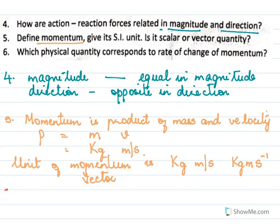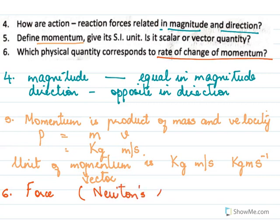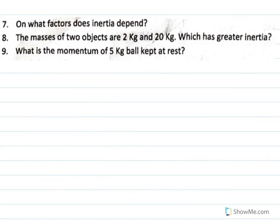Which physical quantity corresponds to rate of change of momentum? It is force. This is given by Newton's second law, which says that rate of change of momentum is directly proportional to force. So remember: rate of change of momentum is force. On which factor does inertia depend? Inertia depends on the mass of the body.